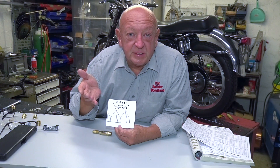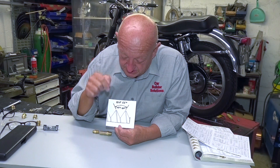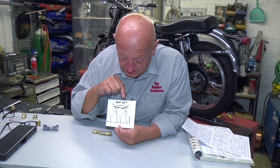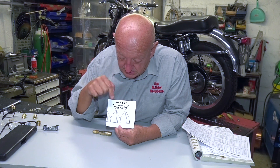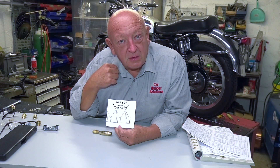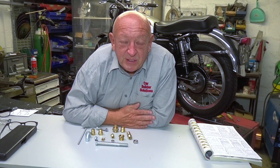In practice these two threads are pretty much interchangeable, the only difference being that the BSP thread is a 55-degree angle and the NPT is 60 degrees. Well, that's about it — thanks for watching, I hope you found that useful. Don't forget you can find loads more of our videos on the CBS YouTube channel. Cheers for now.